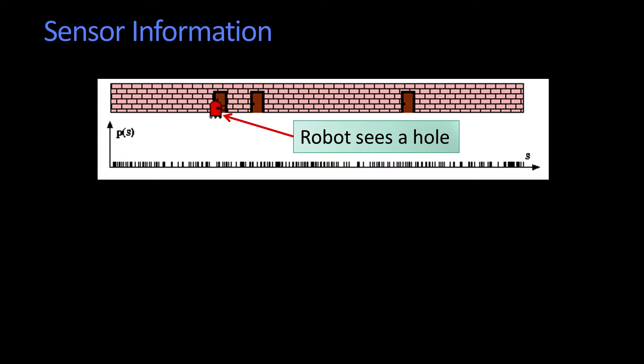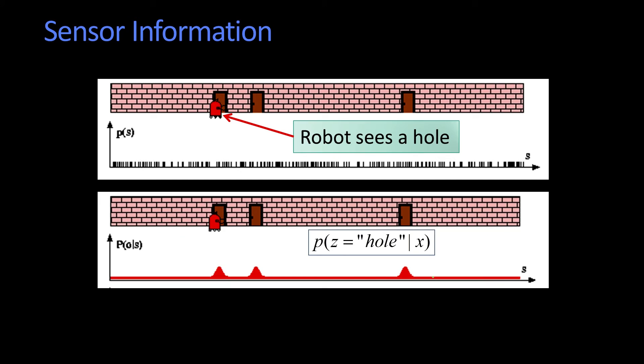Now, using the sensor model, the robot has to evaluate, not where it thinks it is, but first, what's the probability that I would see a hole if I was at each of these locations? So after the robot sees the hole, what it has to evaluate is, what is the likelihood that I would have seen a hole if I was at this location?